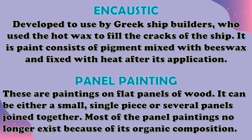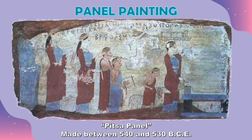Next is panel painting — paintings on flat panels of wood. It can either be a small single piece or several panels joined together. Most panel paintings no longer exist because of their organic composition. Here is an example called the Pitsa Panel, the earliest known panel painting made in the Archaic period between 540 and 530 BCE.